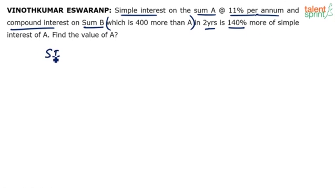So it is like this. SI on A at 11% for 2 years. CI on A plus 400 because I mean it is actually on B which is 400 more than A at same 11% which we have to consider in same 2 years. And then he says CI is 140% more than SI.